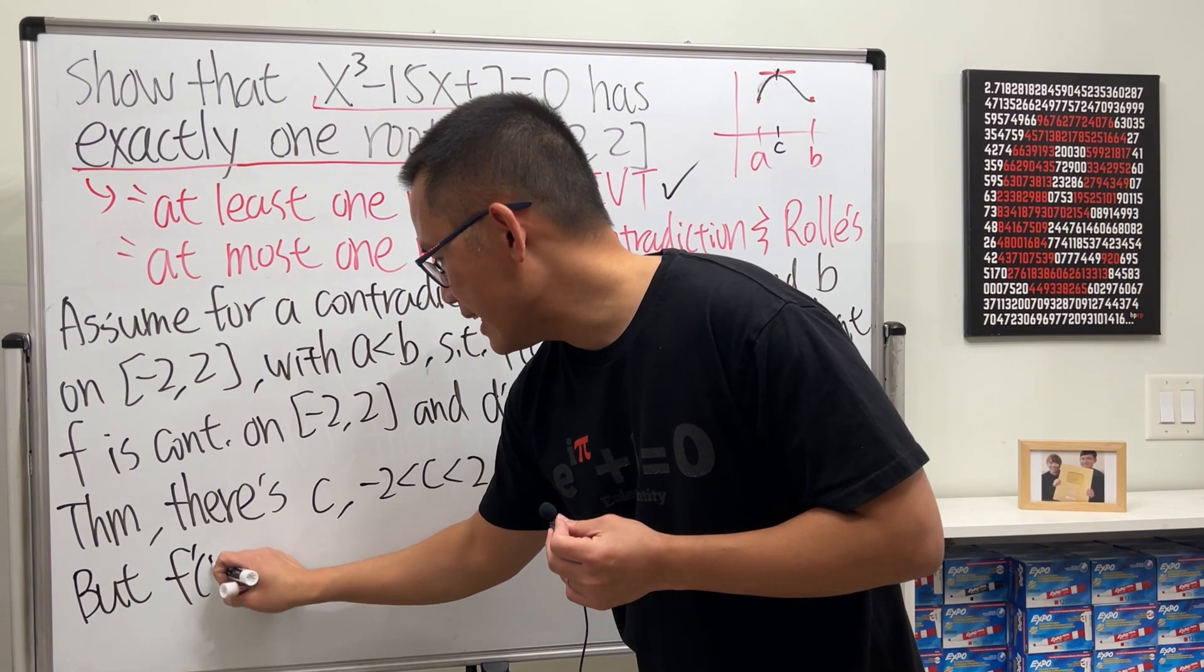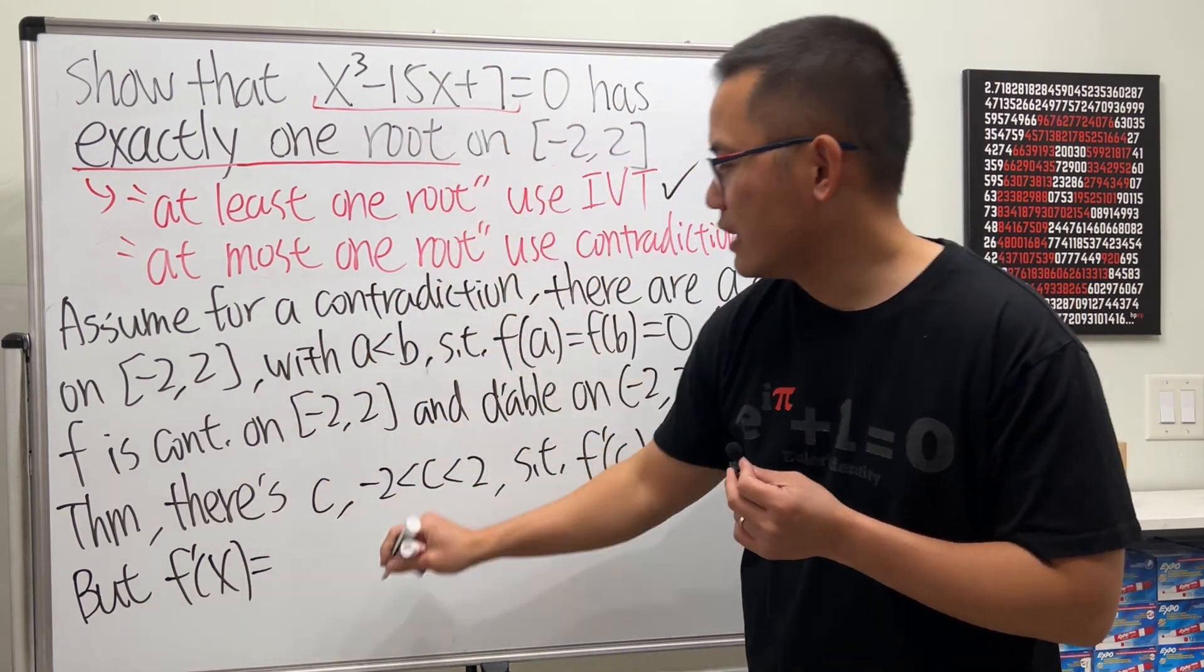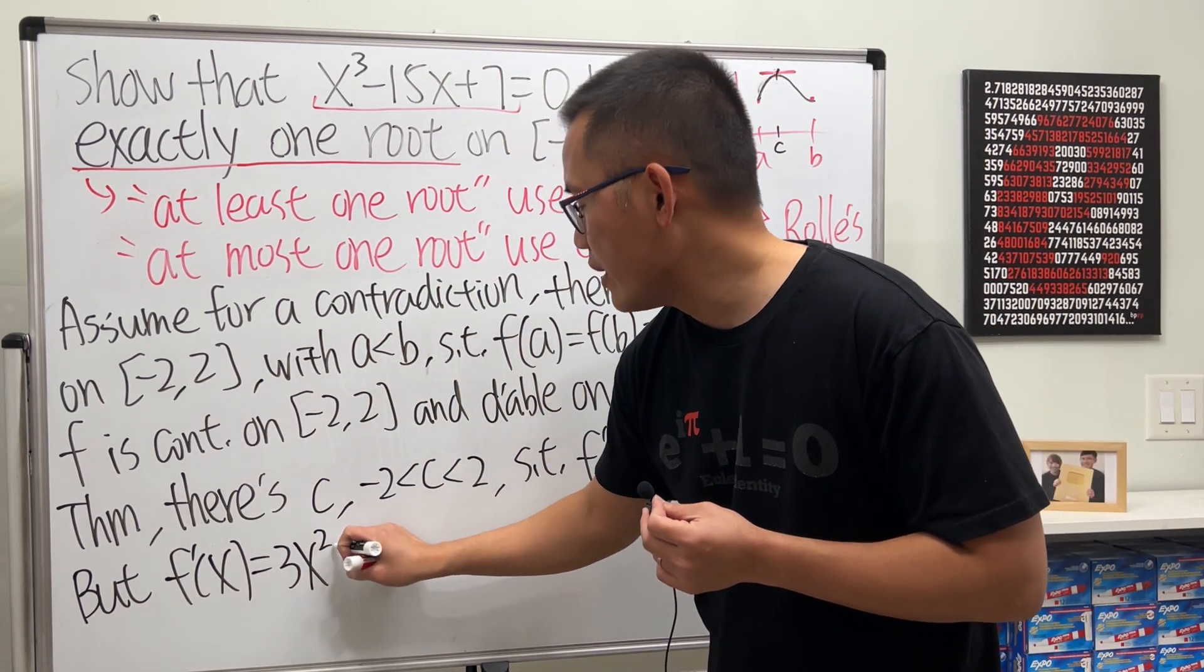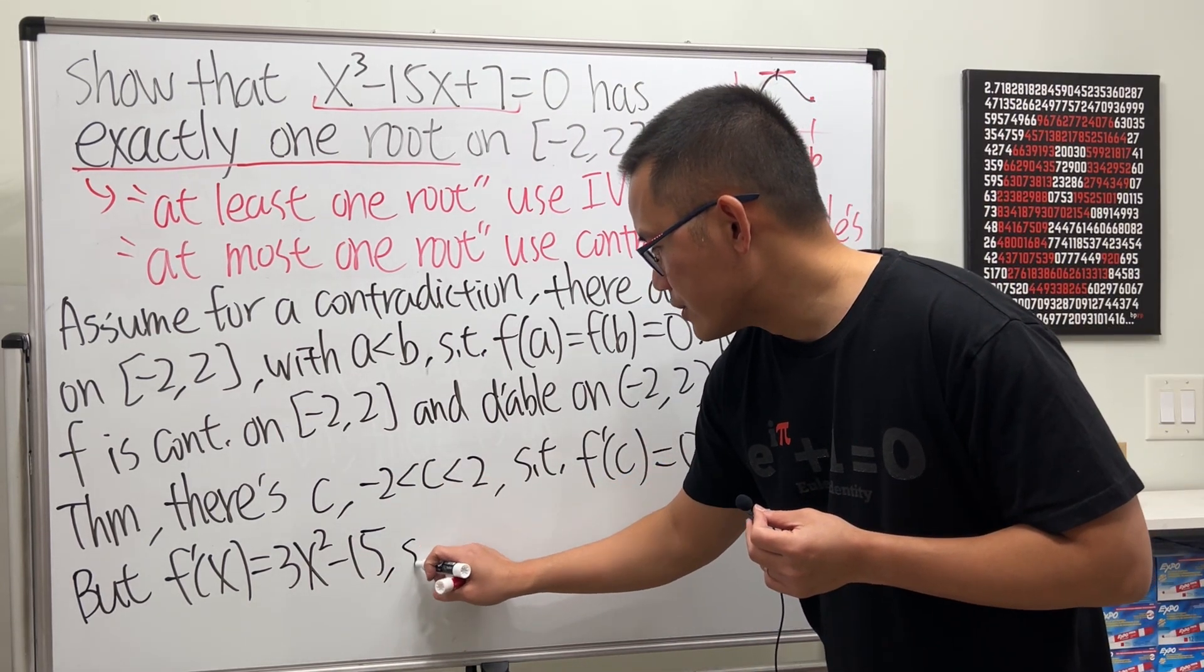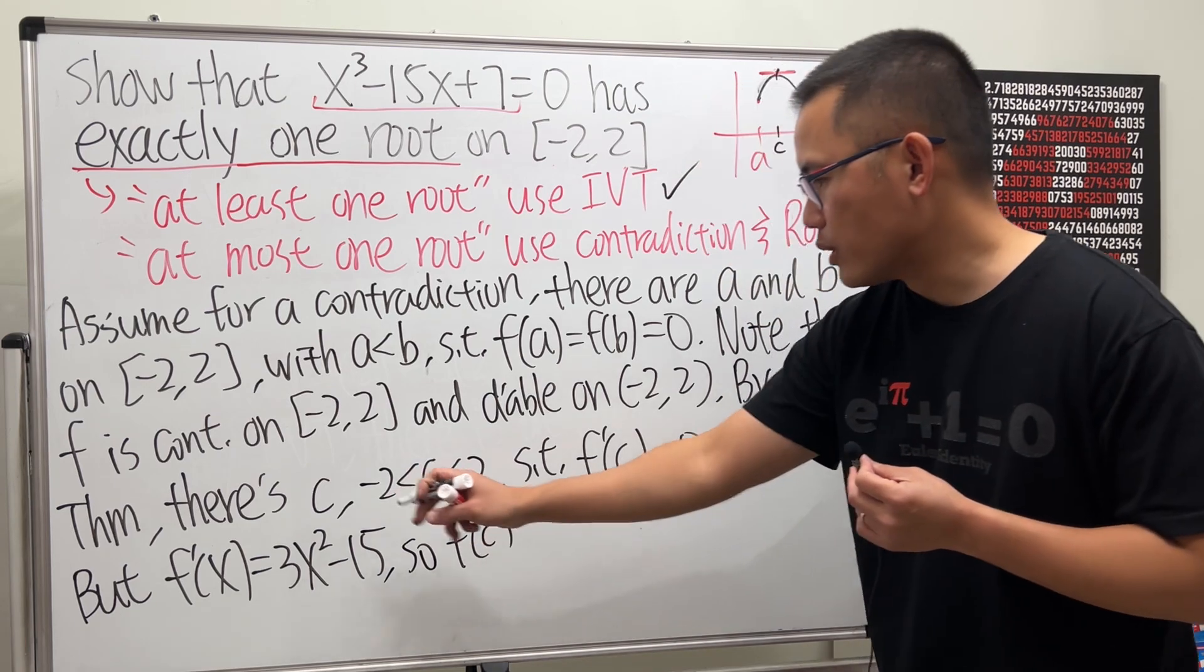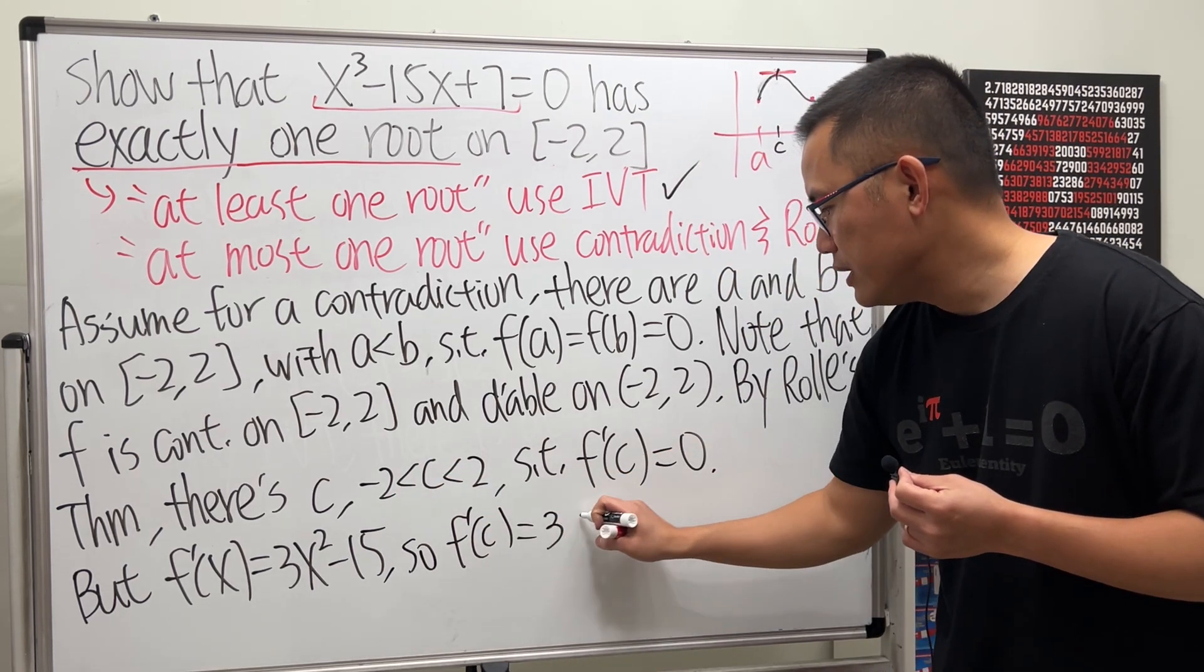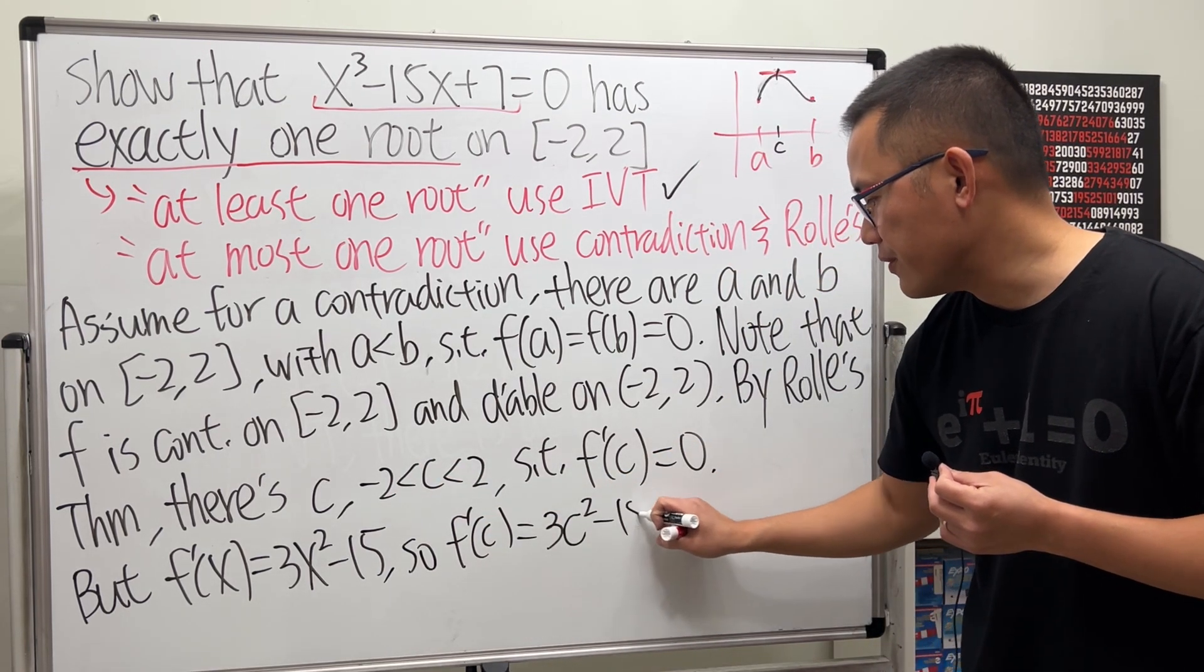Take the derivative of that, we will get 3x squared minus 15. So if you plug in c into our derivative, we get 3c squared minus 15.